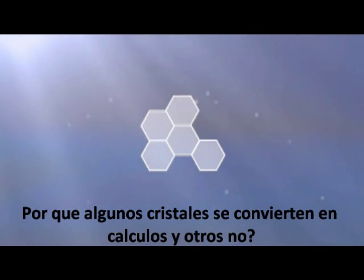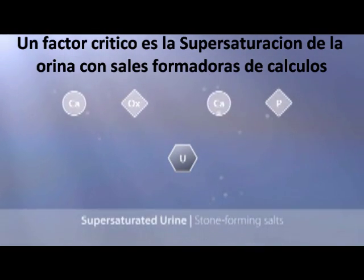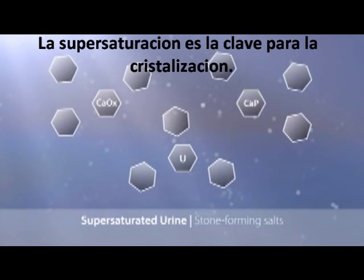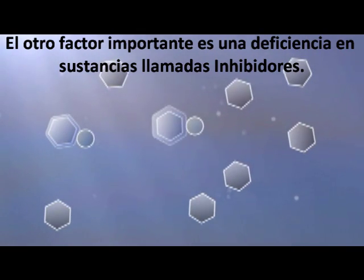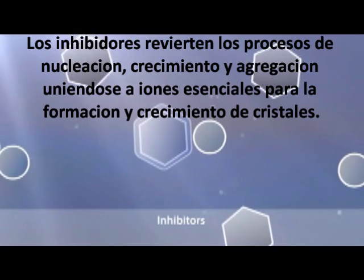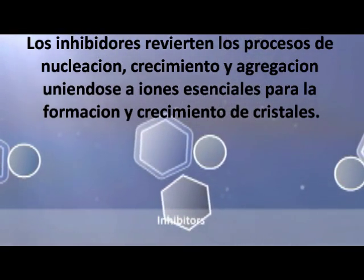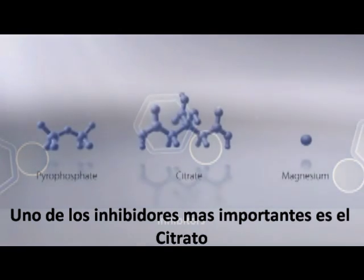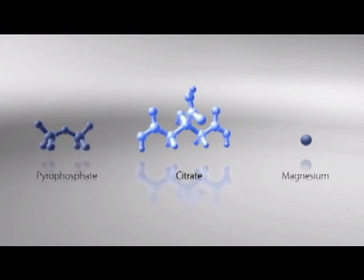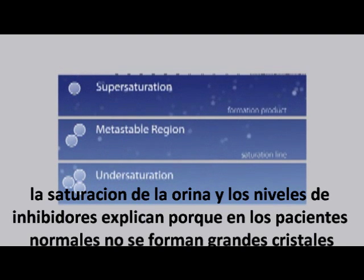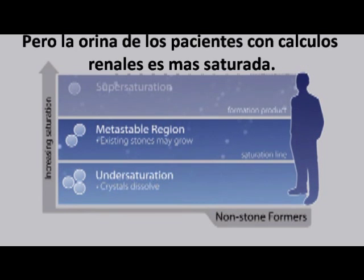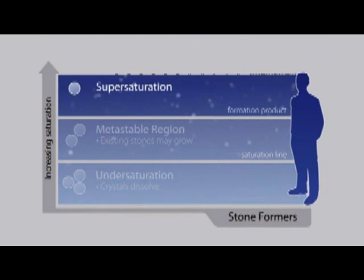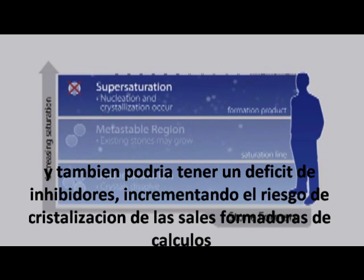But what actually causes crystals to form? Why do some crystals develop into kidney stones, and others do not? One critical factor is supersaturation of the urine with stone-forming salts. Supersaturation is the driving force for crystallization. In under-saturated urine, crystals cannot form. The other important factor is a deficiency in substances called inhibitors. Inhibitors retard the nucleation, growth, and aggregation process by binding ions needed for crystal formation and growth. One of the most important inhibitors is citrate. Urine saturation and inhibitor levels explain why, in normal patients, large crystals are not formed — their urine is not as saturated, and they have sufficient quantities of inhibitors present. But the urine of patients with kidney stones is more saturated and may also lack inhibitors, increasing the propensity for crystallization.